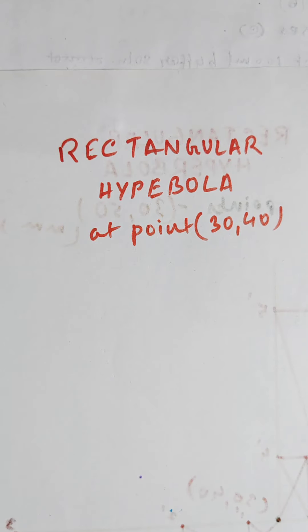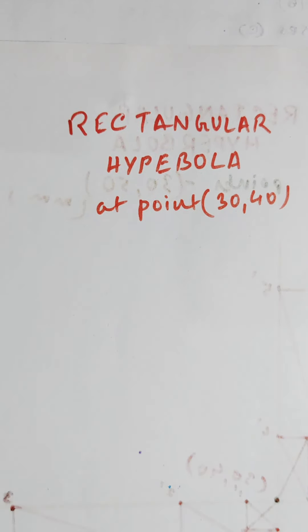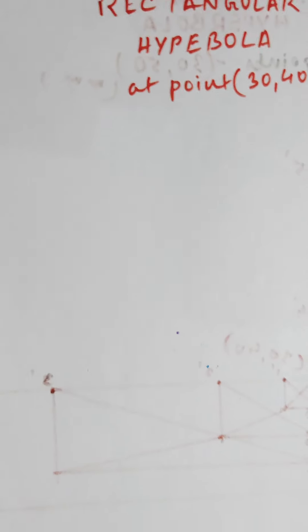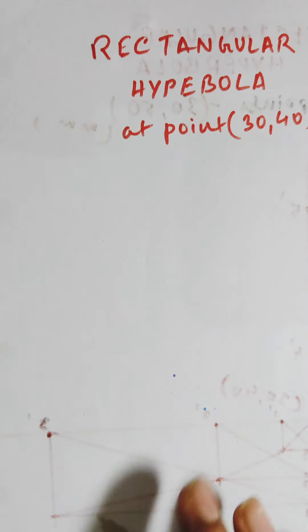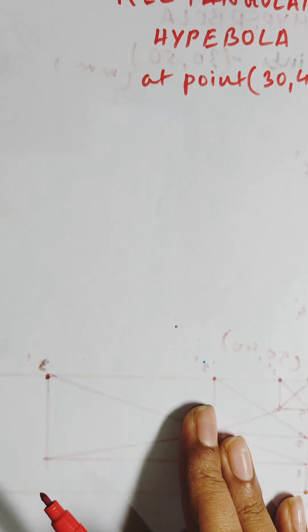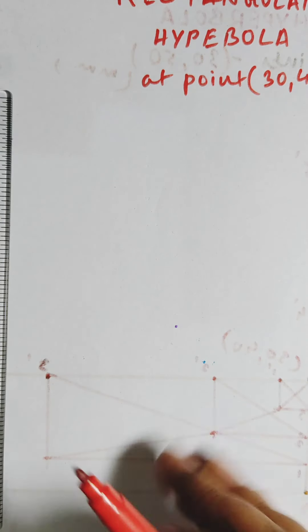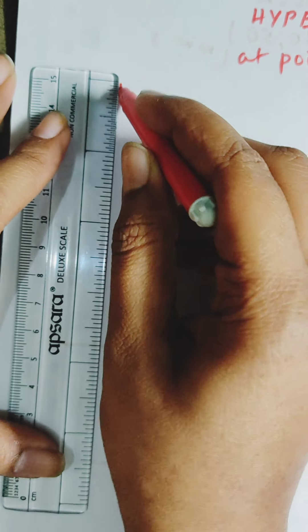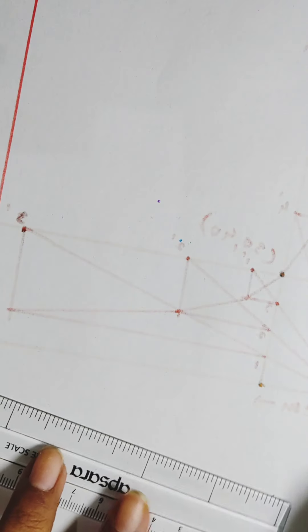Hello friends, today I am going to show you how to draw rectangular hyperbola at point 30 and 40. I will be drawing the x-axis and the y-axis around here. So let's take the x-axis and the y-axis.